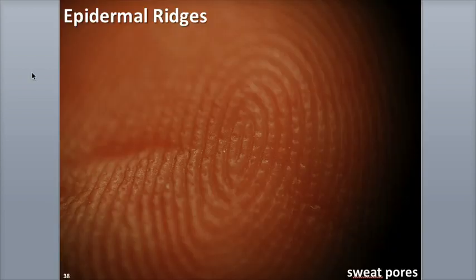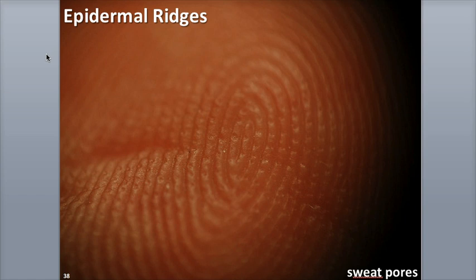We all know that our fingers, palms, toes, and soles are covered in a complex pattern of ridges and grooves. These lines, loops, and whorls are called epidermal ridges and are produced during the third month of fetal development as the epidermis sinks down into the dermis between the dermal papillae. This pattern is unique for everyone, even twins, and is determined in part by genetics.